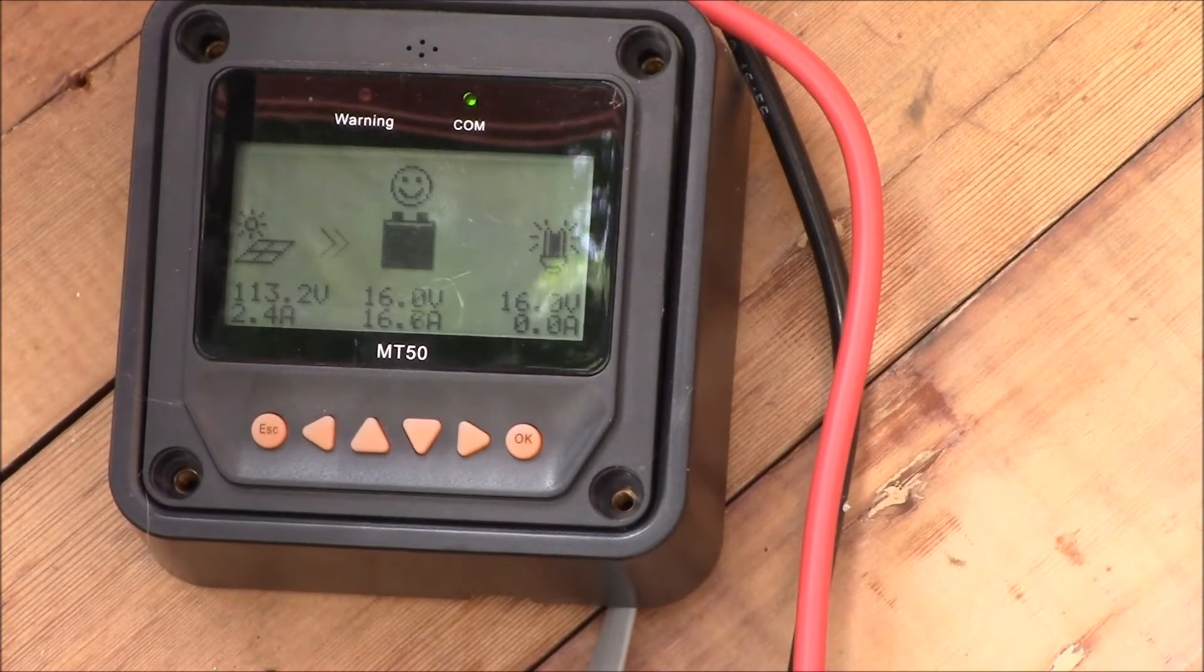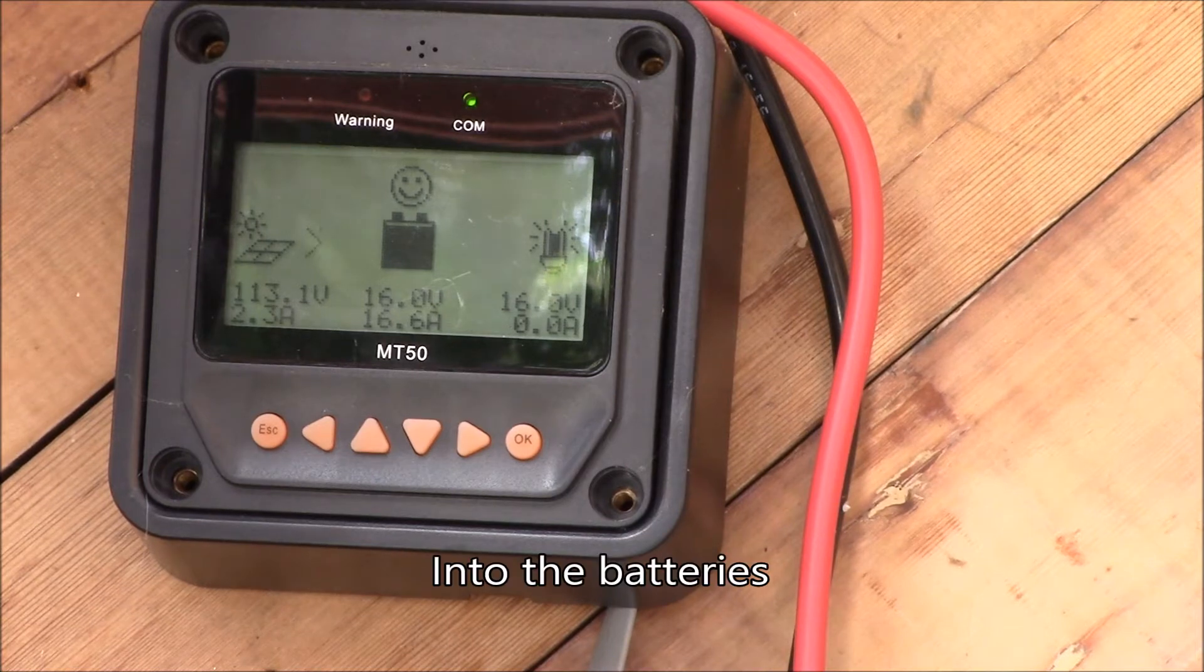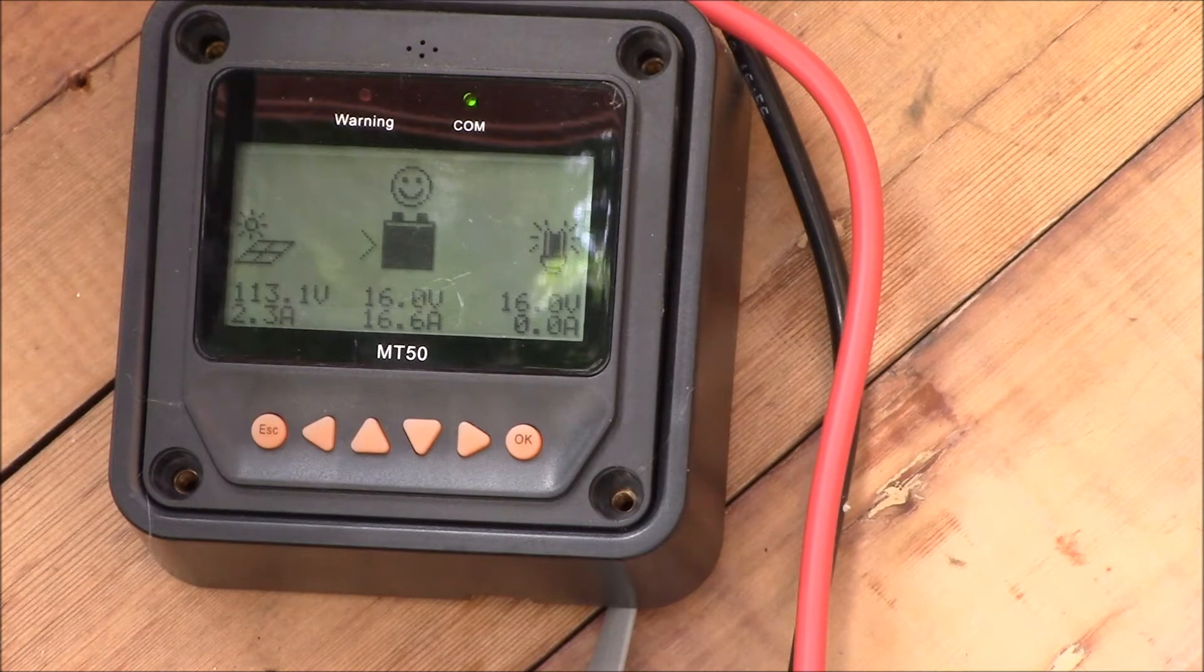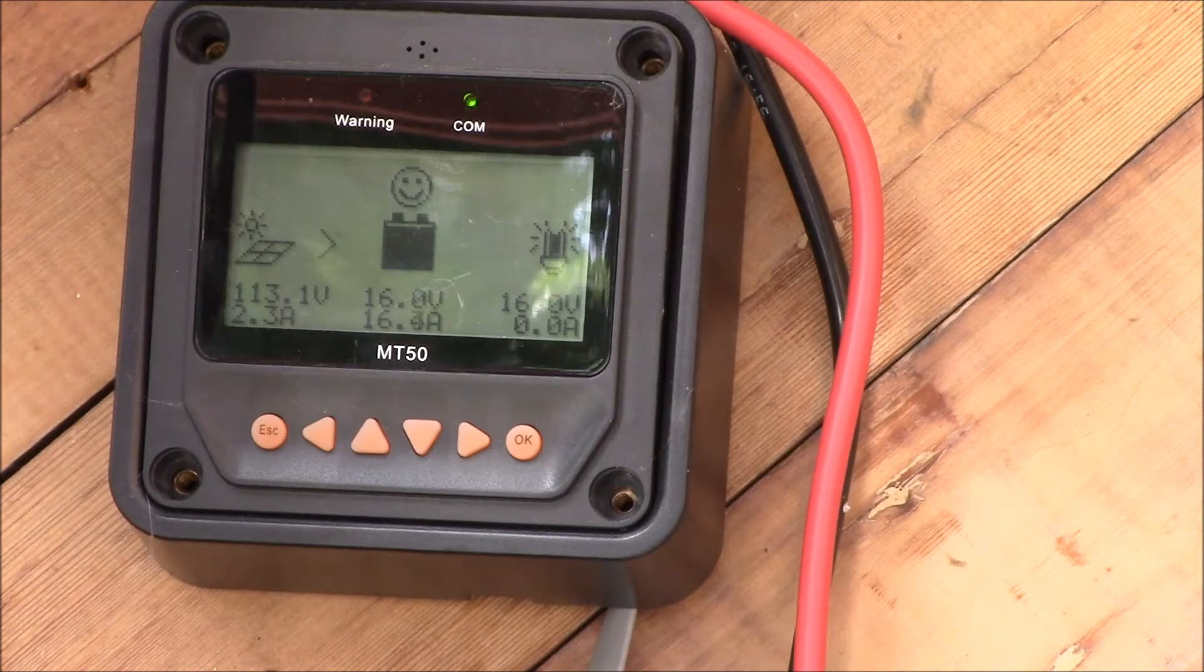Good morning YouTube. We're pulling in around 270 watts on the EP solar charge controller. It's got 16 volts and about 17 amps, and 113 volts on the three series panels at 2.3 amps.